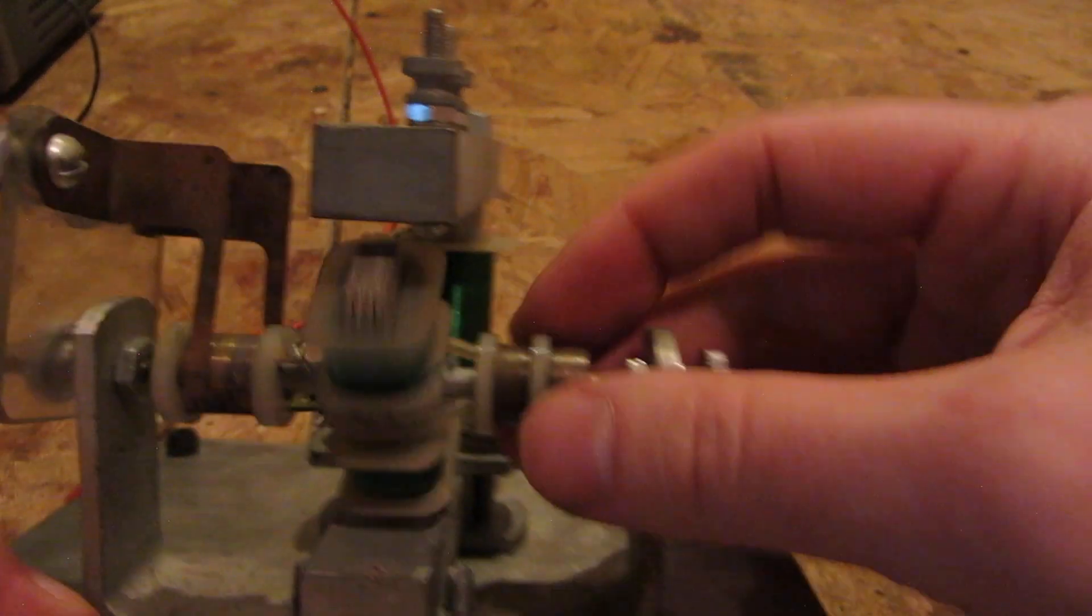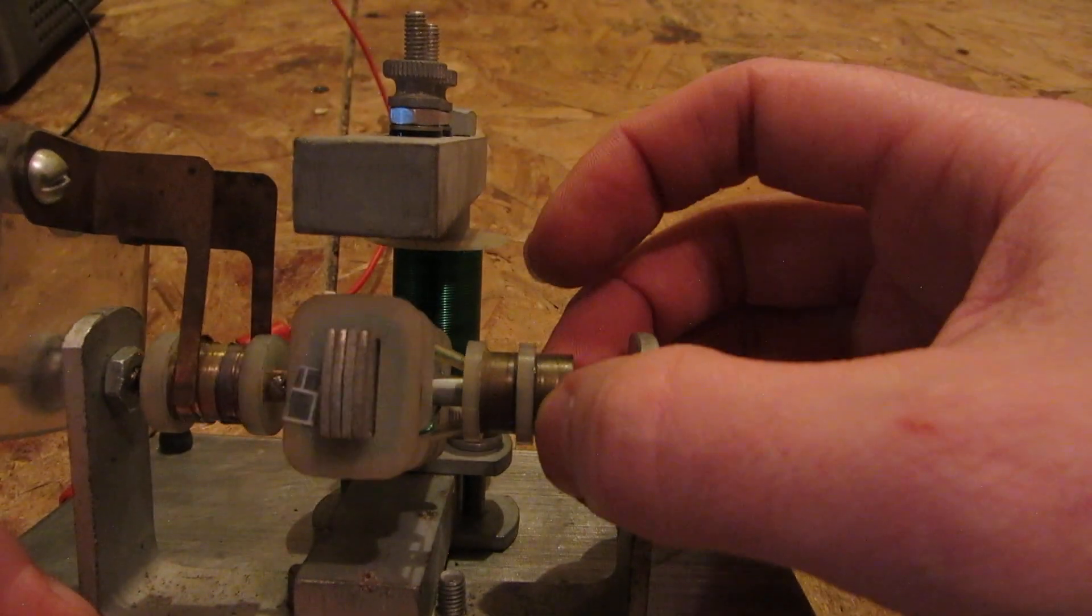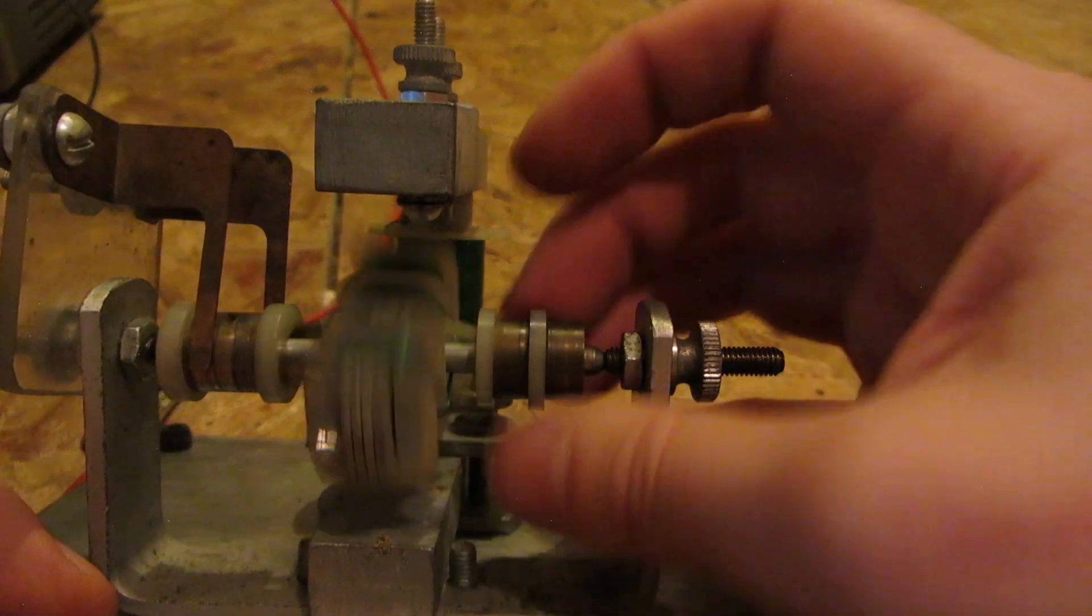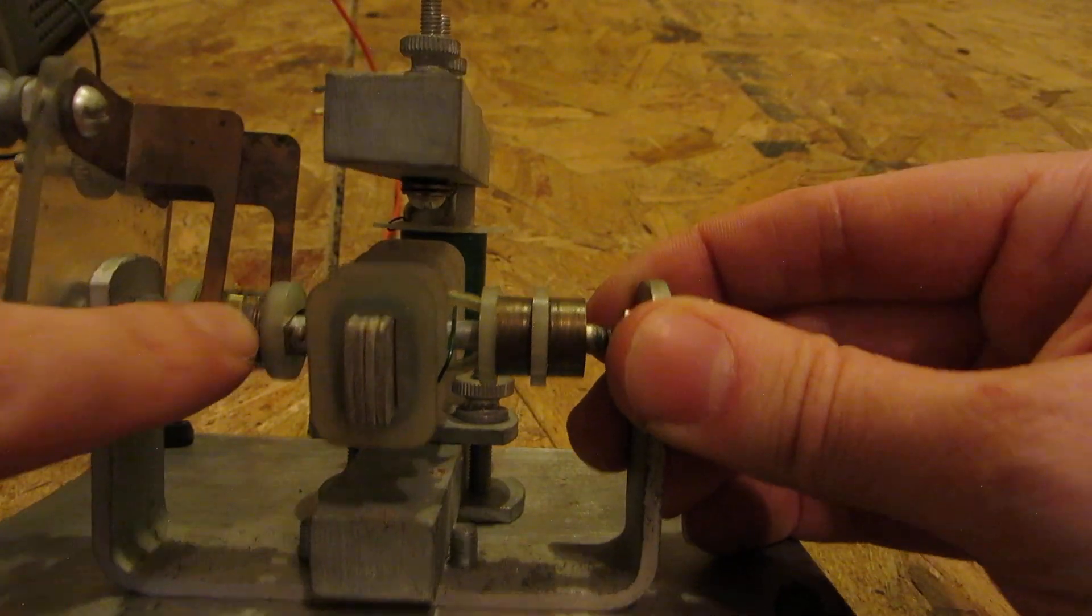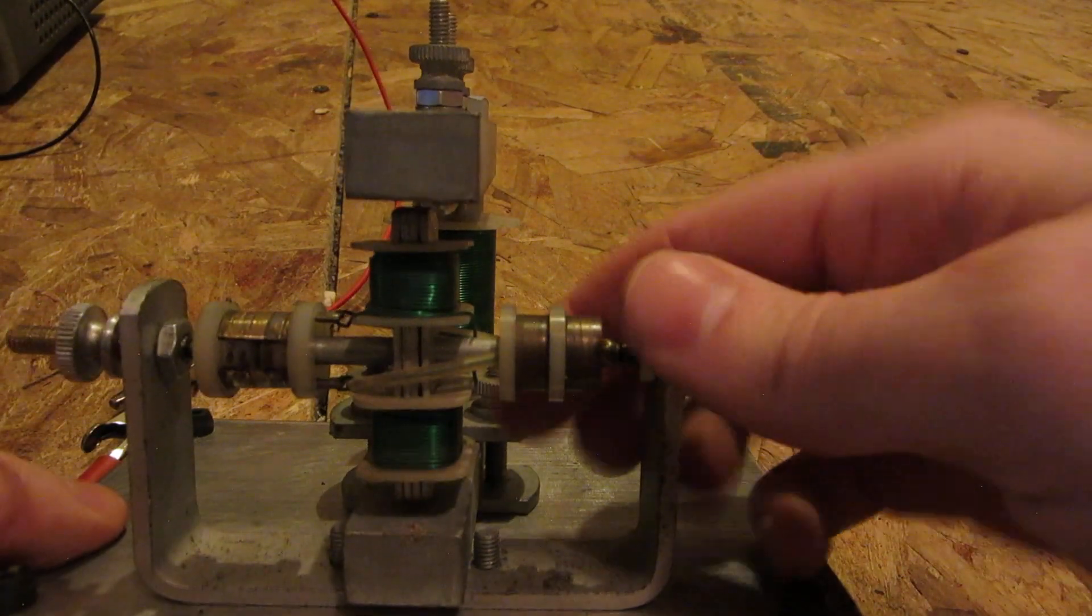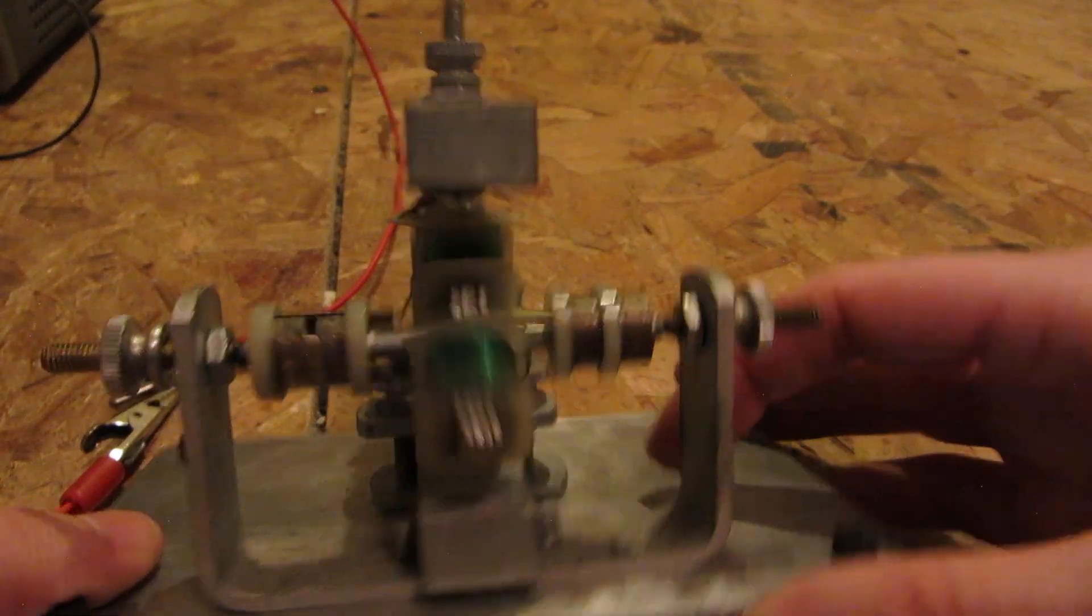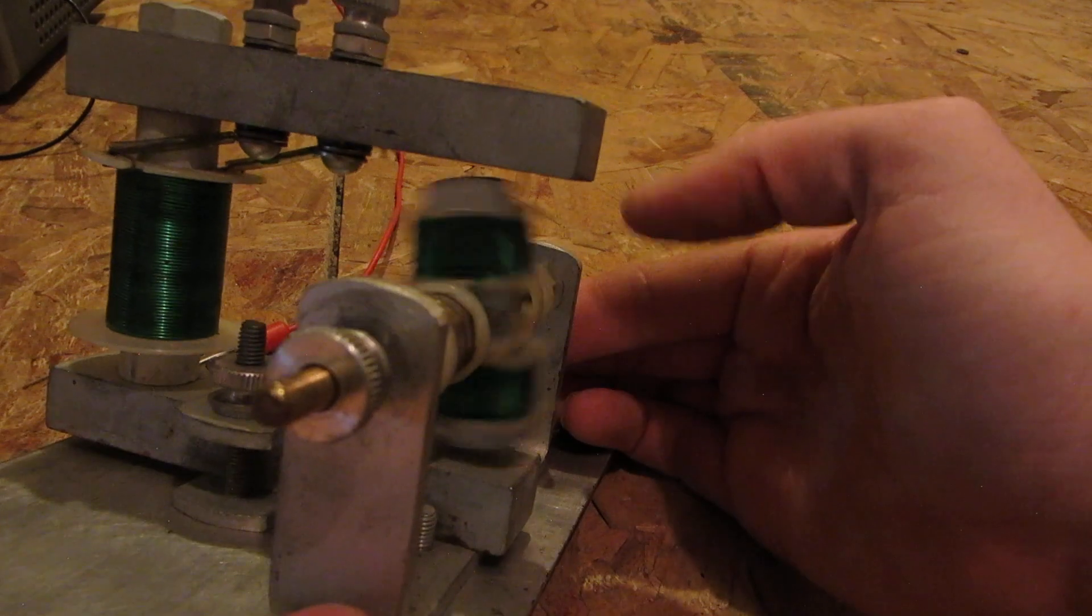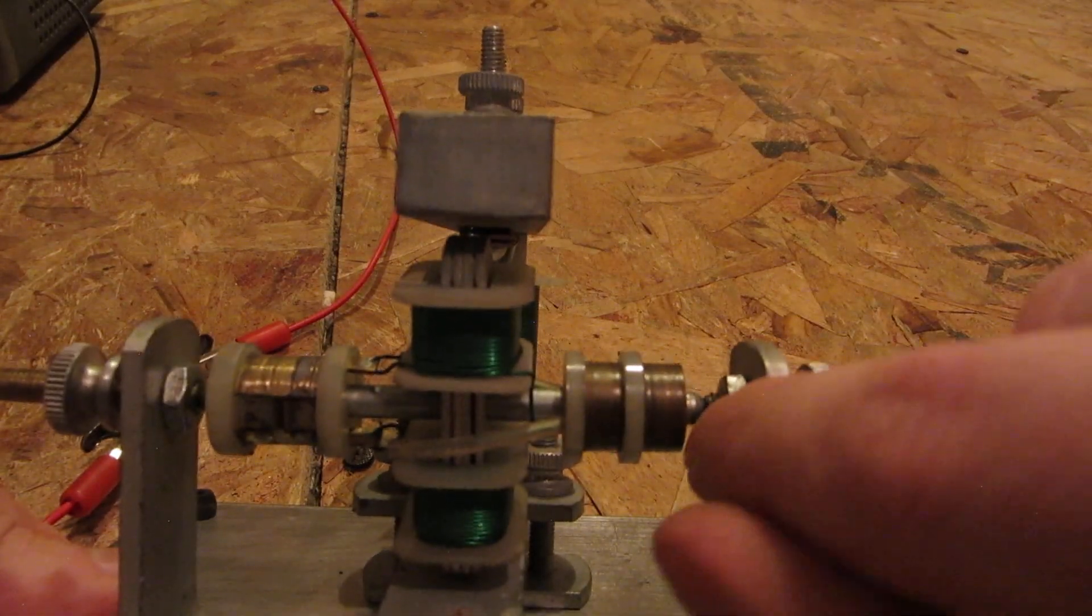This here might be swappable with a permanent magnet, and this here would be generator contact points. So this could actually functionally run as a generator, and you could probably run a belt right off of this side if you wanted. This thing turns very freely, and all it's got is like two needlepoint bearings on each side.